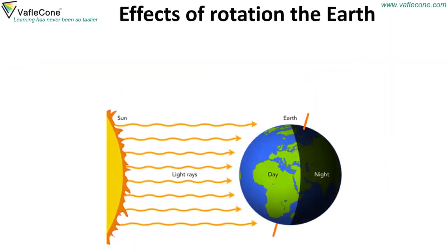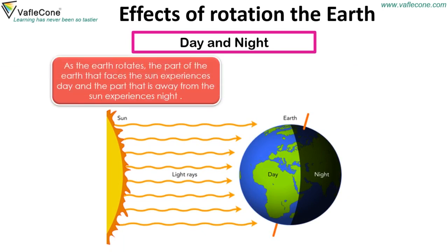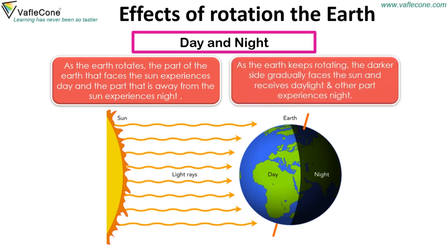Effects of Rotation: Day and Night. As the Earth rotates, the part of the Earth that faces the sun experiences day, and the part that is away from the sun experiences night. As the Earth keeps rotating, the darker side gradually faces the sun and receives daylight, while the other part experiences night.